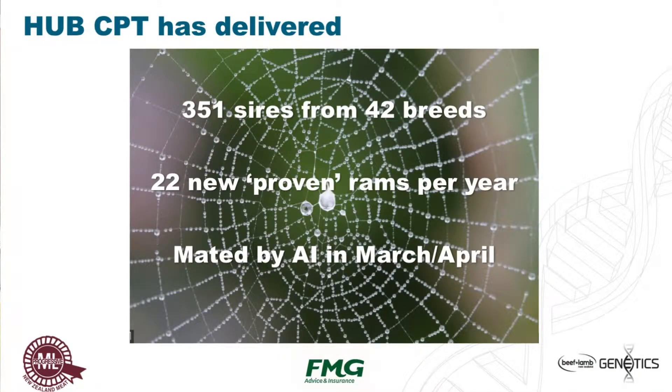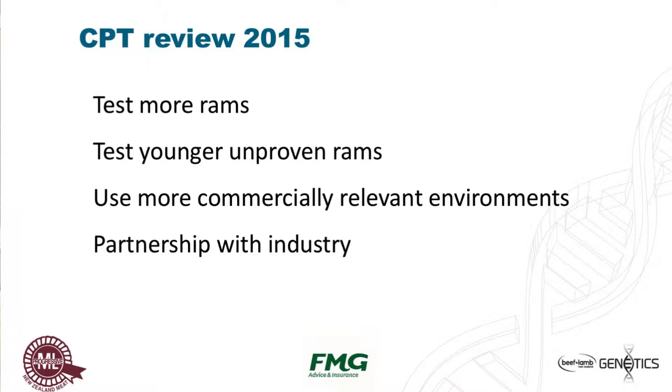What we've achieved in those 15 years is pretty good. We've got 350-odd sires assessed out of 42 different breeds, doing 22 new ones every year by AI in March and April. In a review in 2015, it was confirmed we're doing a good job supplying the industry and we'll keep delivering this. But we've got an opportunity to test more rams and test them younger — helping genetic gain ramp up by getting more information on young rams and selecting them while they're still alive, rather than finding out how good they were after they'd already died. We're also getting into more commercially relevant environments and getting partnerships with industry.